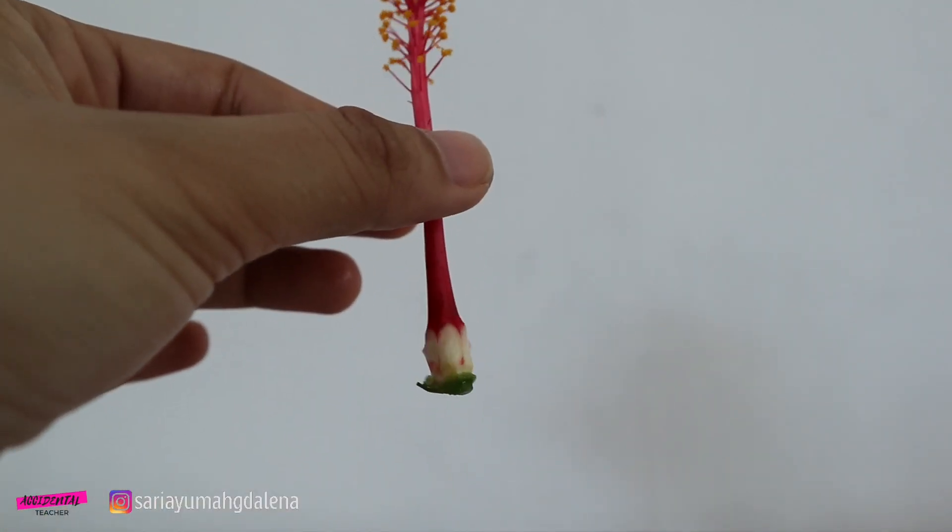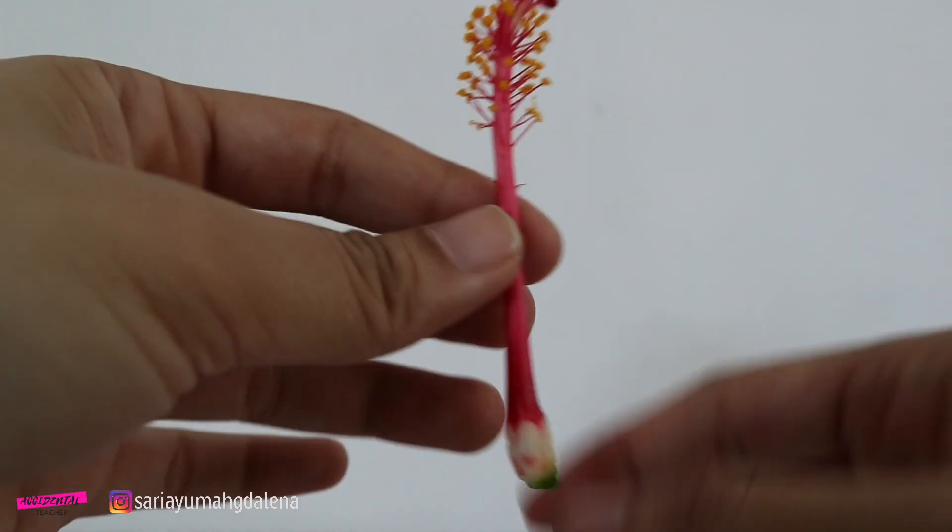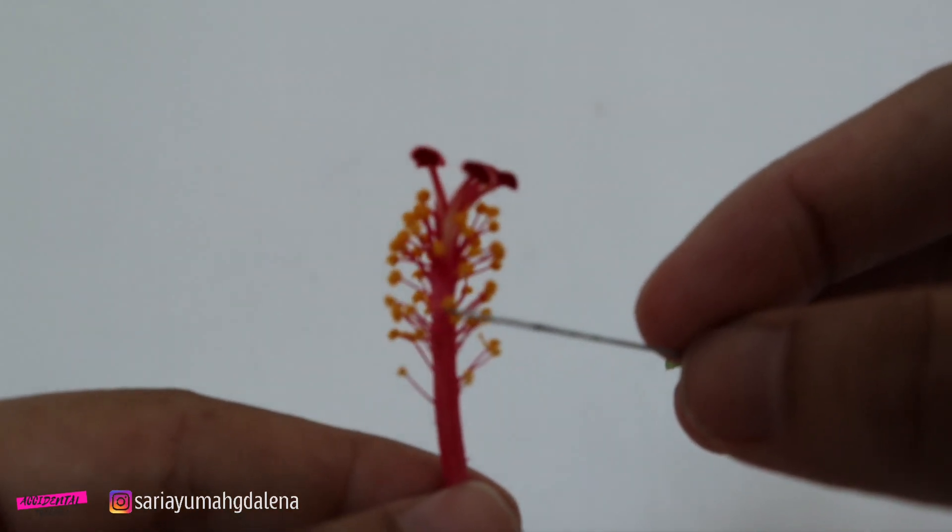Here you can see the male part of the flower. The yellow one is the male part. So it consists of the filament. The filament is the thin stalk supporting the anther.